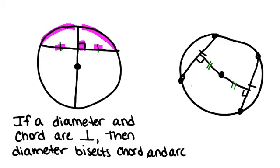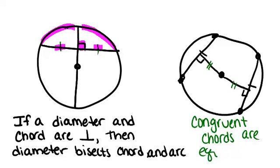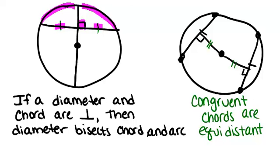Congruent chords are always equidistant from the center of the circle. This would be true for any circle. Remember that the word equidistant just means the same distance away from.